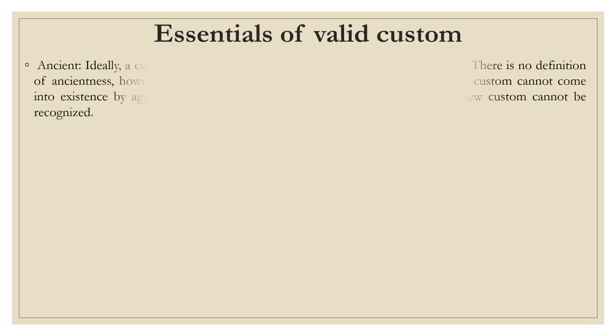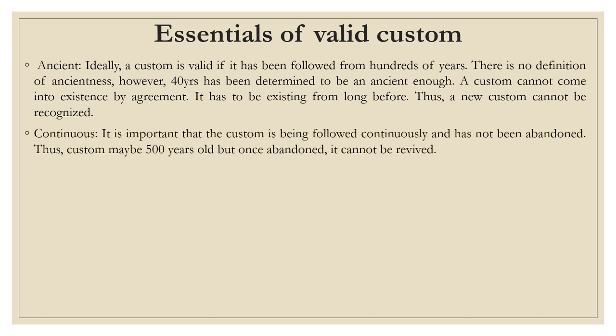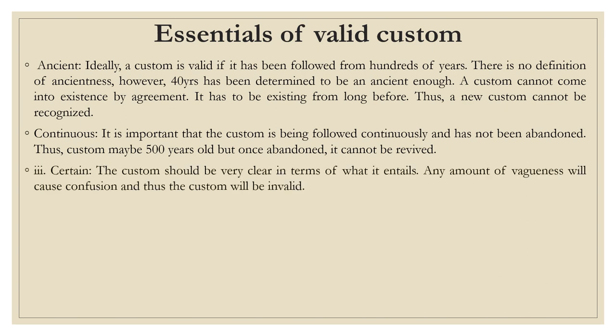Details of essentials of valid customs: First is ancient — a custom is valid if it has been followed from hundreds of years. Because there is no definition of ancientness, however, 40 years has been determined to be ancient enough. A custom cannot come into existence by agreement; it has to be existing from long before, and thus a new custom cannot be recognized. Second is continuous — it is important that the custom is being followed continuously and has not been abandoned. A custom may be 500 years old but once abandoned, it cannot be revived. Third is certain — the custom should be very clear in terms of what it entails; any vagueness will cause confusion and thus the custom will be invalid.